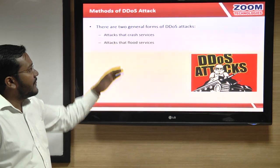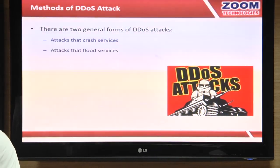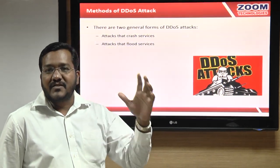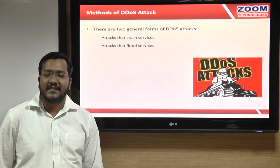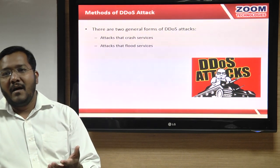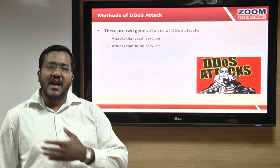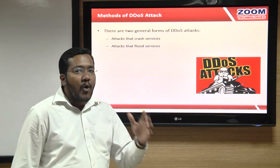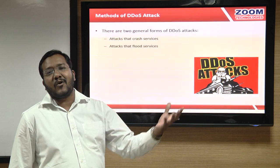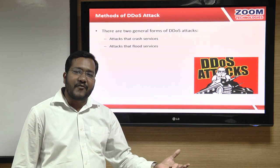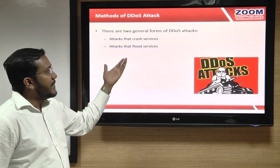There are two types of DDoS attacks. In the first type, they crash the service so users cannot access the resources directly. In the second type, they flood the service — for example, a hacker starts spamming a mail server with thousands of emails. The service remains available, but the hacker uses up the server's memory and disk space, consuming the server's resources.